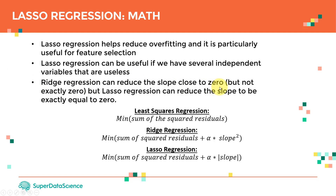Ridge regression can reduce the slope close to zero, but not exactly zero — because of the squaring term. Lasso regression, however, can reduce the slope to be exactly equal to zero, which means we can directly eliminate independent variables that are useless. This is a key advantage of lasso over ridge: it can be used for feature selection.